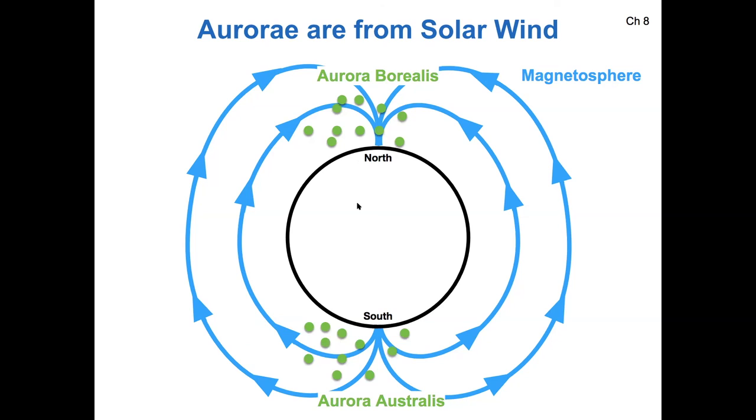And once those charged particles smash into the Earth's atmosphere, they cause the air to glow, just like a neon light. Basically, the same physics behind a neon light causes the aurora borealis and the aurora australis. So if you've ever wondered why aurora happened mostly near the poles, that's where most of the magnetic field lines wind up. And so the charged particles are more likely to smash into the atmosphere there than they are near the edges of the Earth, near the equator.